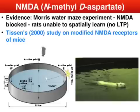Another study by Tsien involved modifying the NMDA receptors of a group of mice. These mice were able to learn tasks more efficiently than a control group whose NMDA receptors were not modified.